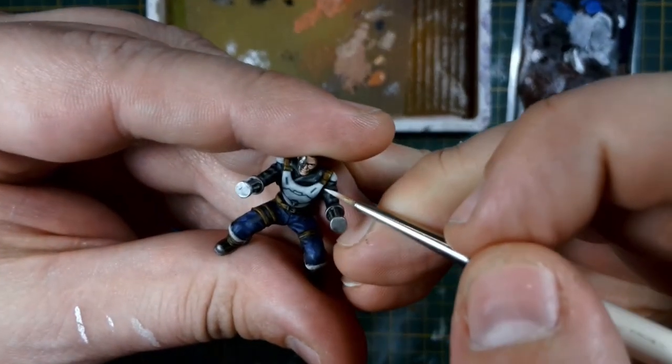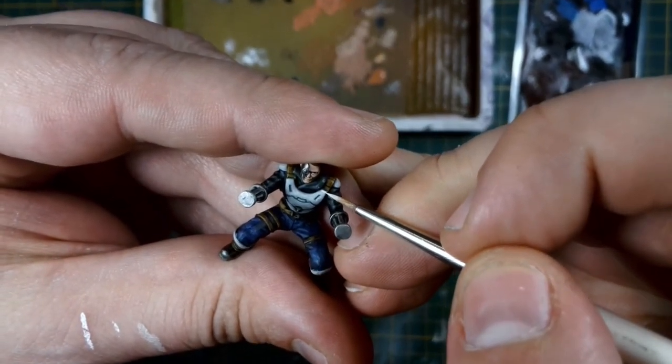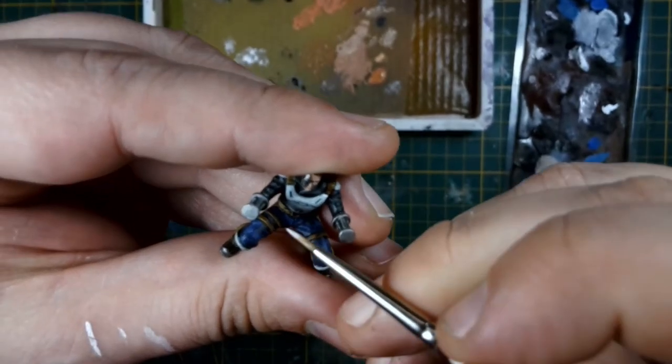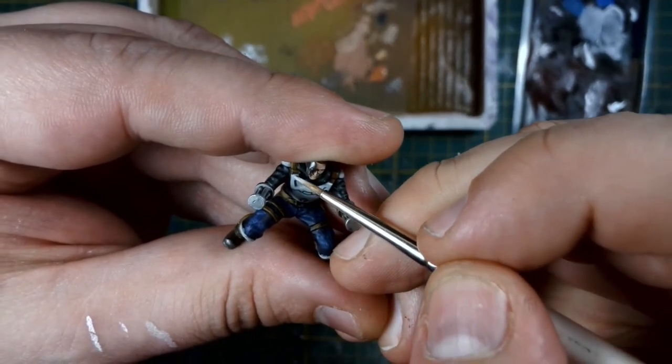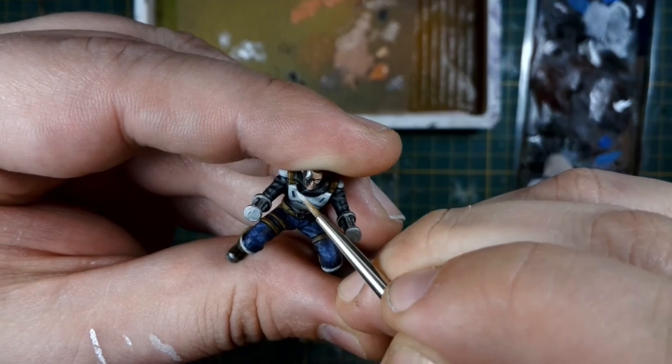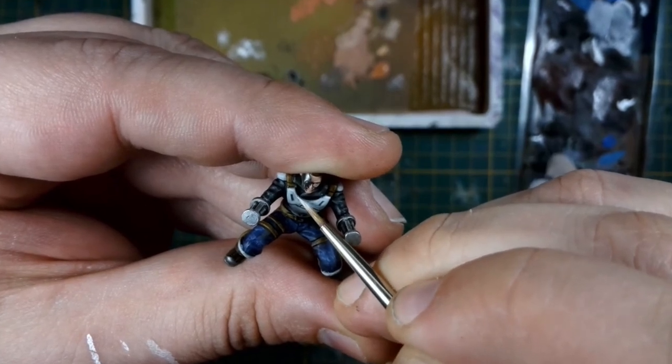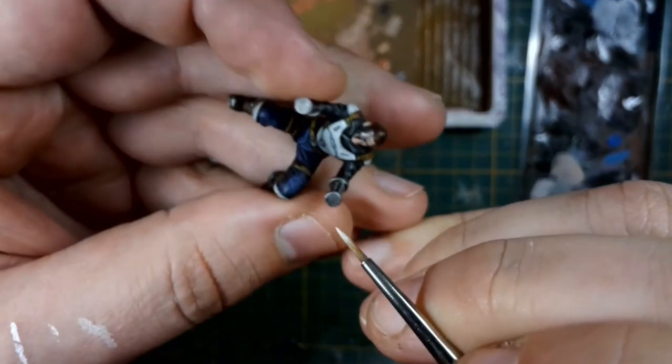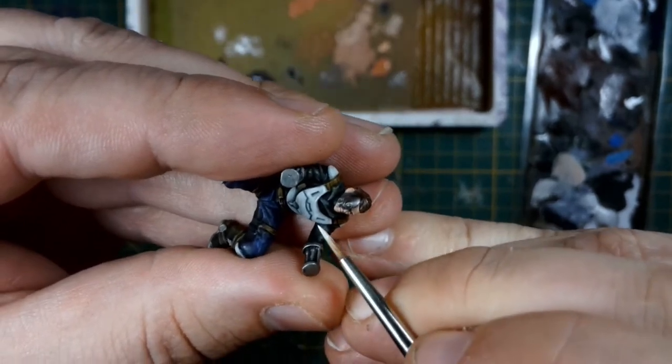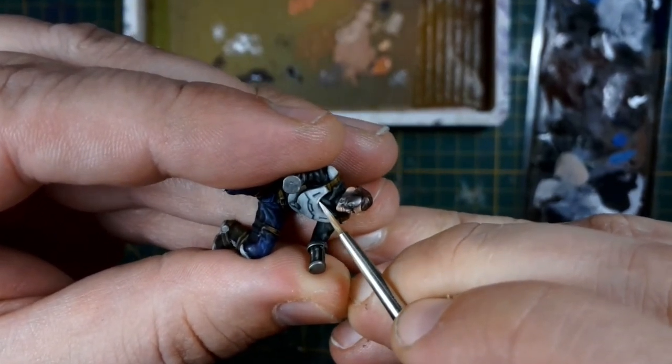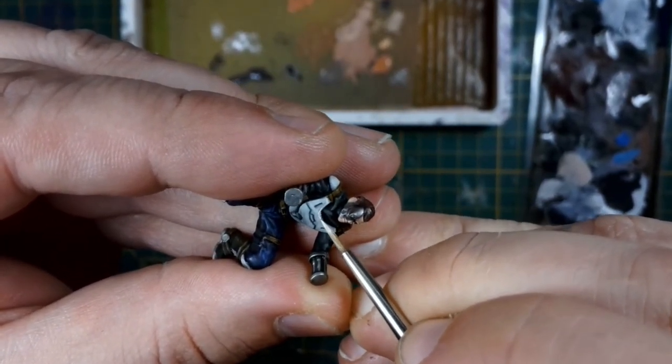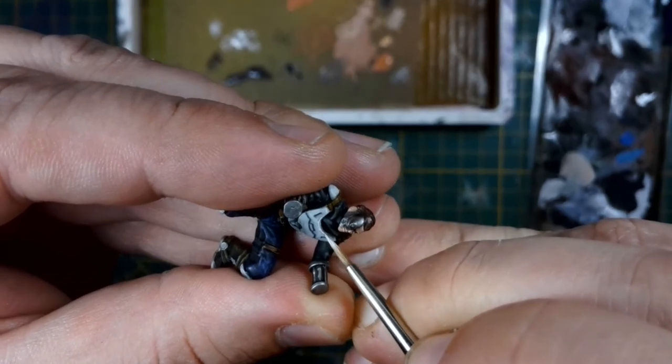The next step of painting all of the white armor panels is the highlighting. I'm just using Ceramite White, which is Games Workshop base paint that I thin down quite a bit on my wet palette. And I just go over all of the edges of the armor panels with the tip of my fine brush, just so that it gets nicely accentuated and you can see the contours of these armor panels better on the finished model.